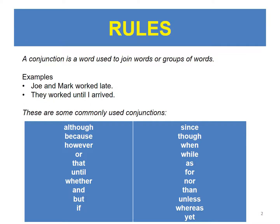Rules. A conjunction is a word used to join words or groups of words. Examples: Joe and Mark worked late. They worked until I arrived. These are some commonly used conjunctions.